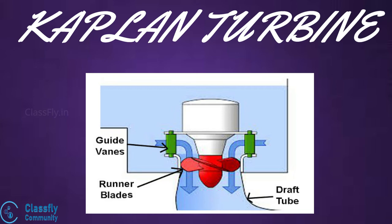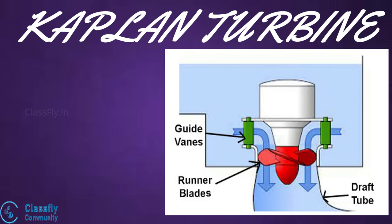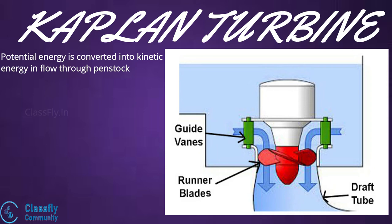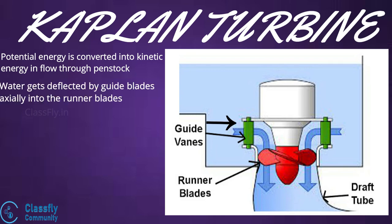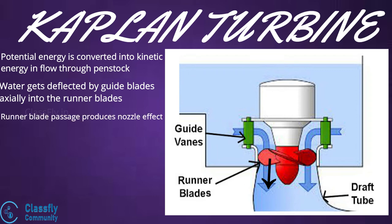Similar to the Francis turbine, the Kaplan turbine also has fixed guide blades at the inlet. Water from the reservoir flows through the penstock and enters the spiral casing, where a part of the potential energy is converted into kinetic energy. The water then moves through the guide blades and gets deflected axially to the runner blades. When water flows over the runner blades, the blade passages act as a nozzle.